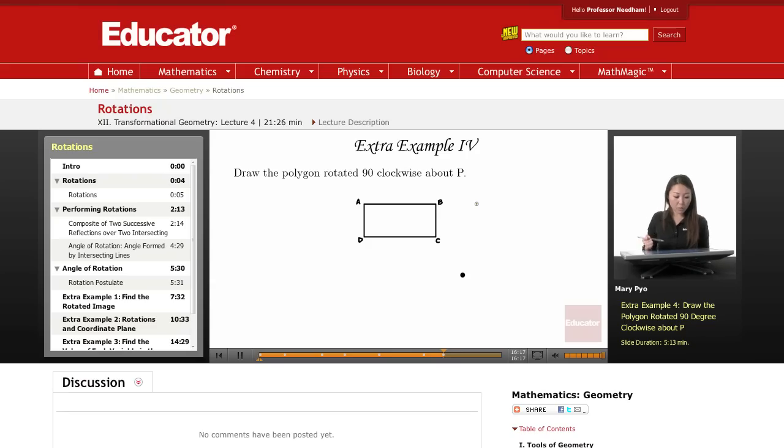Okay, draw the polygon rotated 90 degrees clockwise about P. So this is P right here, and we're going to draw it clockwise, meaning we're going to go this way, right, 90 degrees. So if you want, you can use a protractor. Okay, we're going to just kind of sketch it.